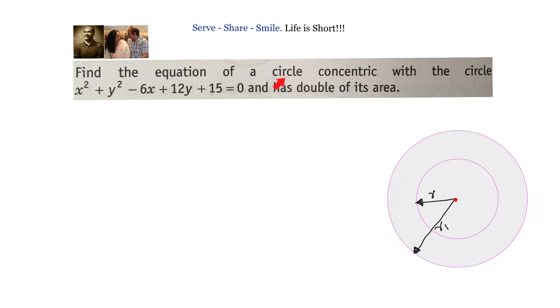Find the equation of a circle concentric with the circle x squared plus y squared minus 6x plus 12y plus 15 equals 0 and has double of its area.